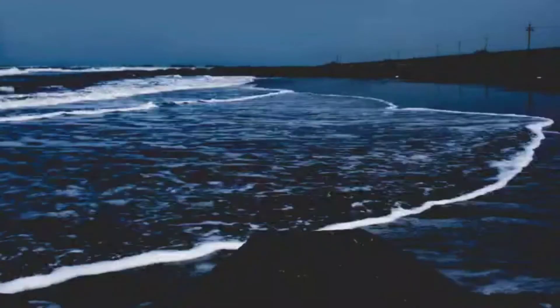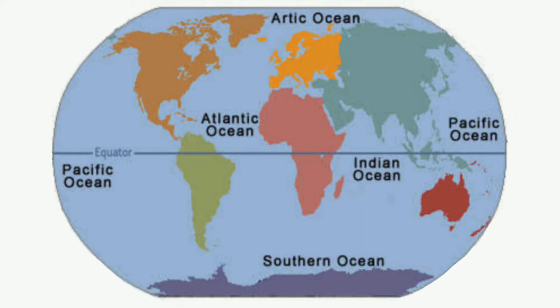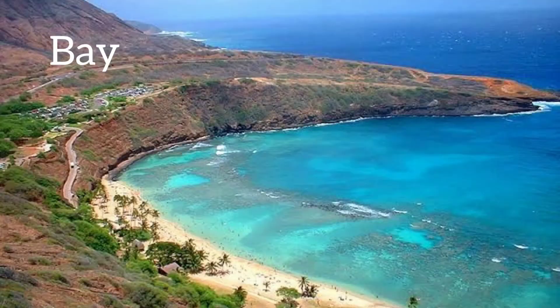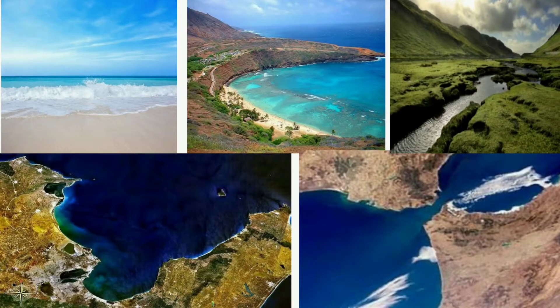There are five oceans on the earth: the Pacific Ocean, Atlantic Ocean, Arctic Ocean, Indian Ocean, and Southern Ocean. Sea, bay, strait, gulf, and creek are all water bodies that are part of the ocean.